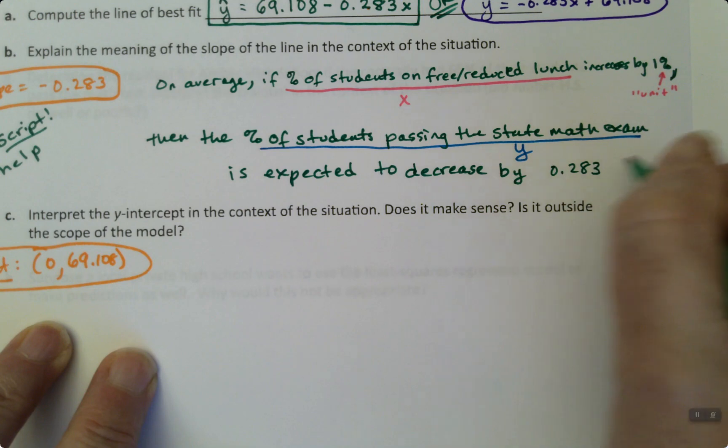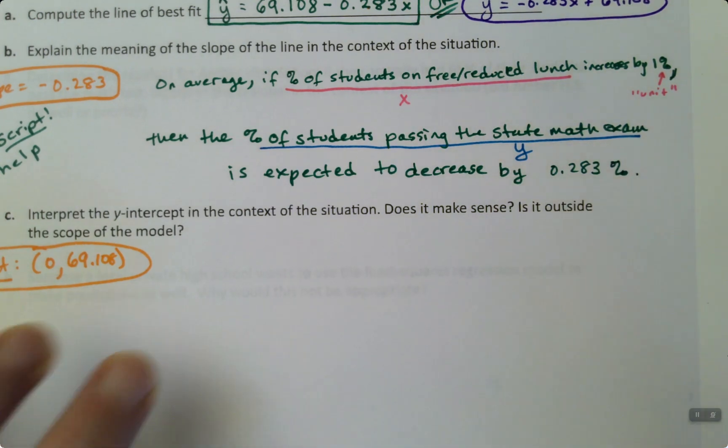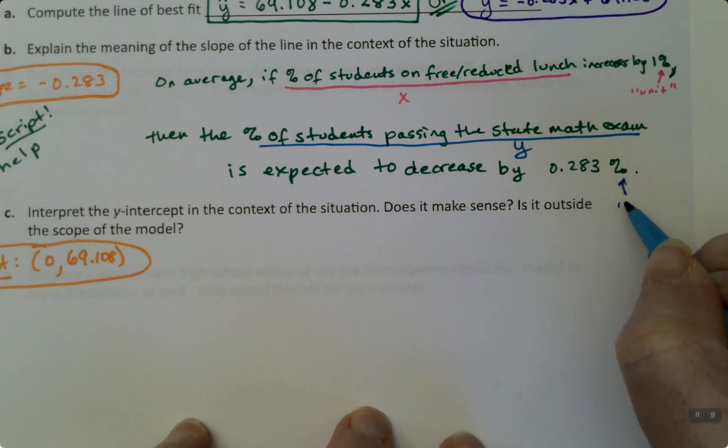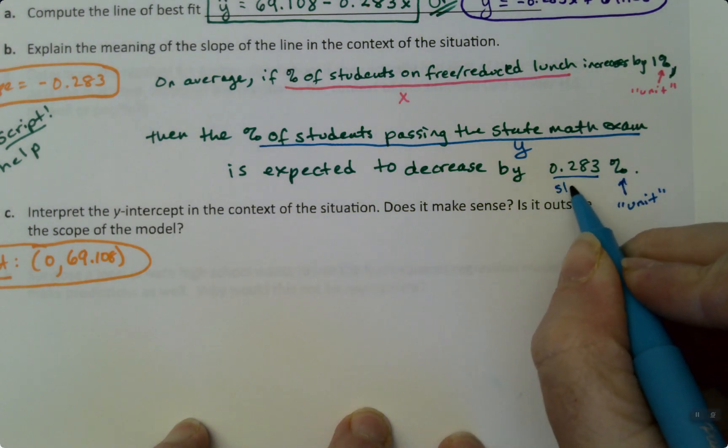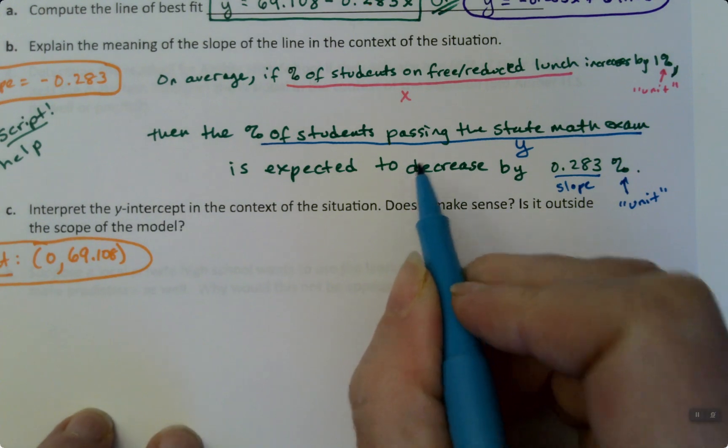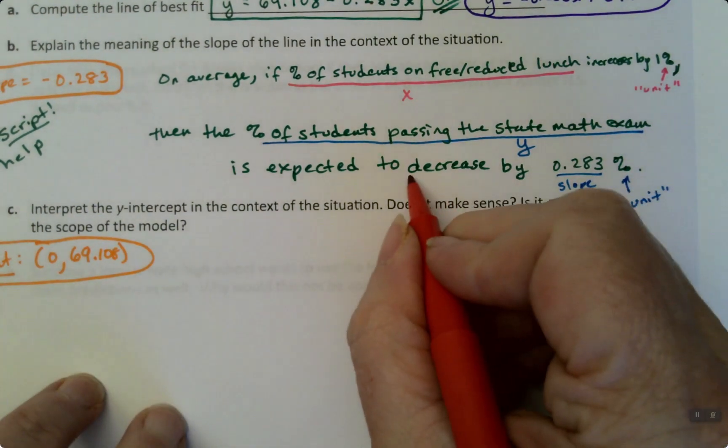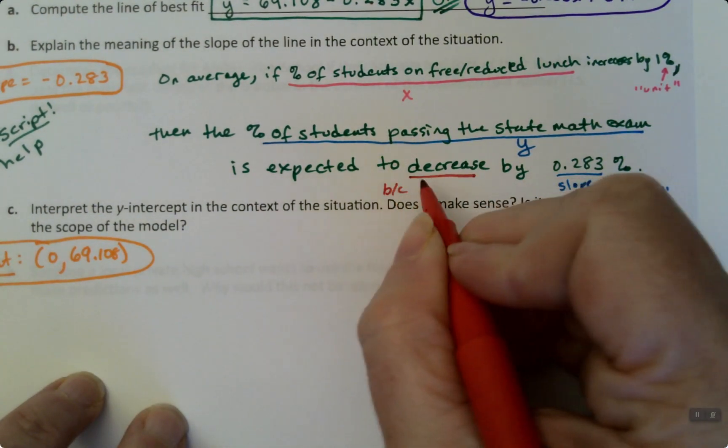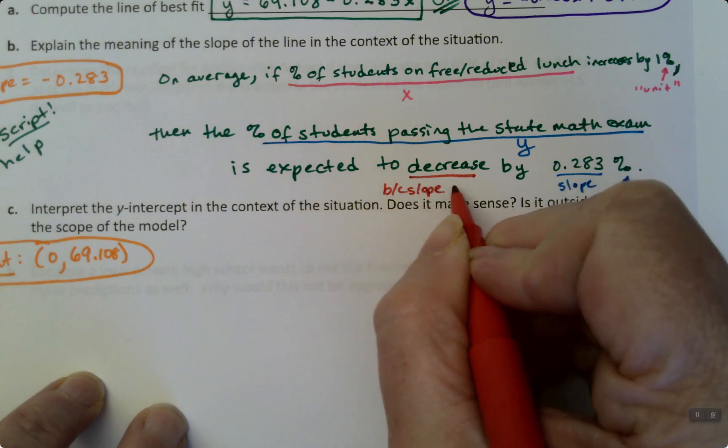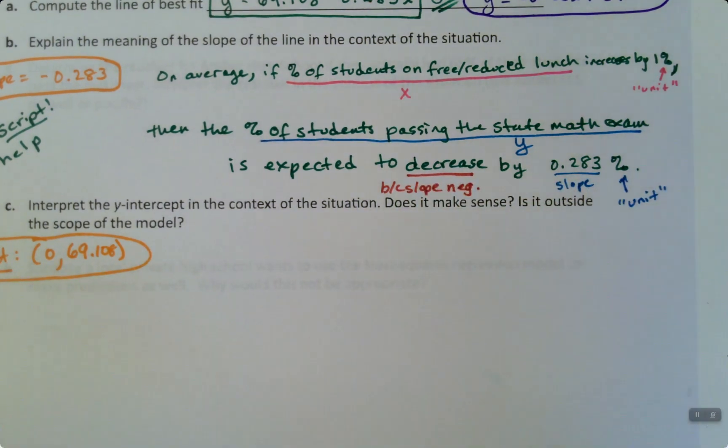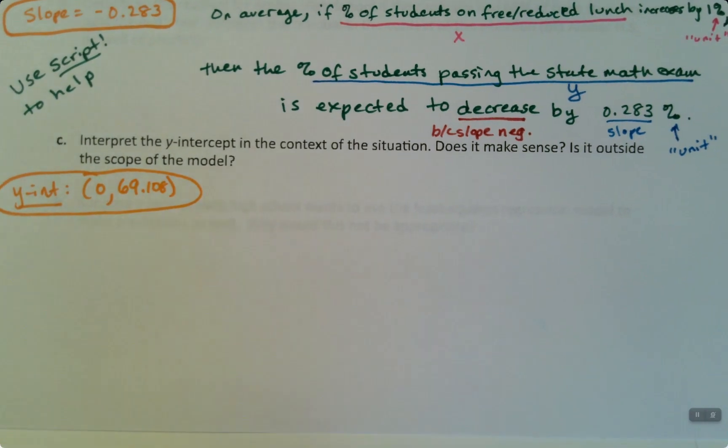So we'll say decrease by, and then the number, 0.283, and that would be percent as well in this case. So the percent sign there is kind of the unit. That right there is the slope, and then we chose decrease because the slope is negative. So we choose the word decrease.